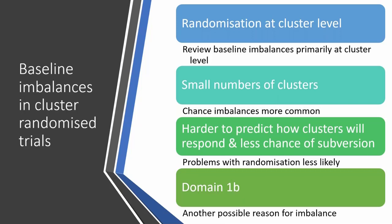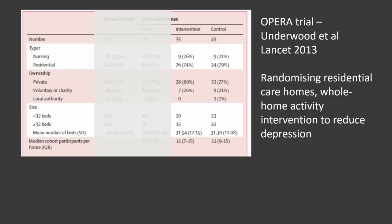The chances are that imbalances are probably chance imbalances. There is another possible reason for some types of imbalances, and that's what domain 1B is about — I will come back to that. But first, I want to introduce the OPRA trial, which I'm going to use throughout the session as an example.